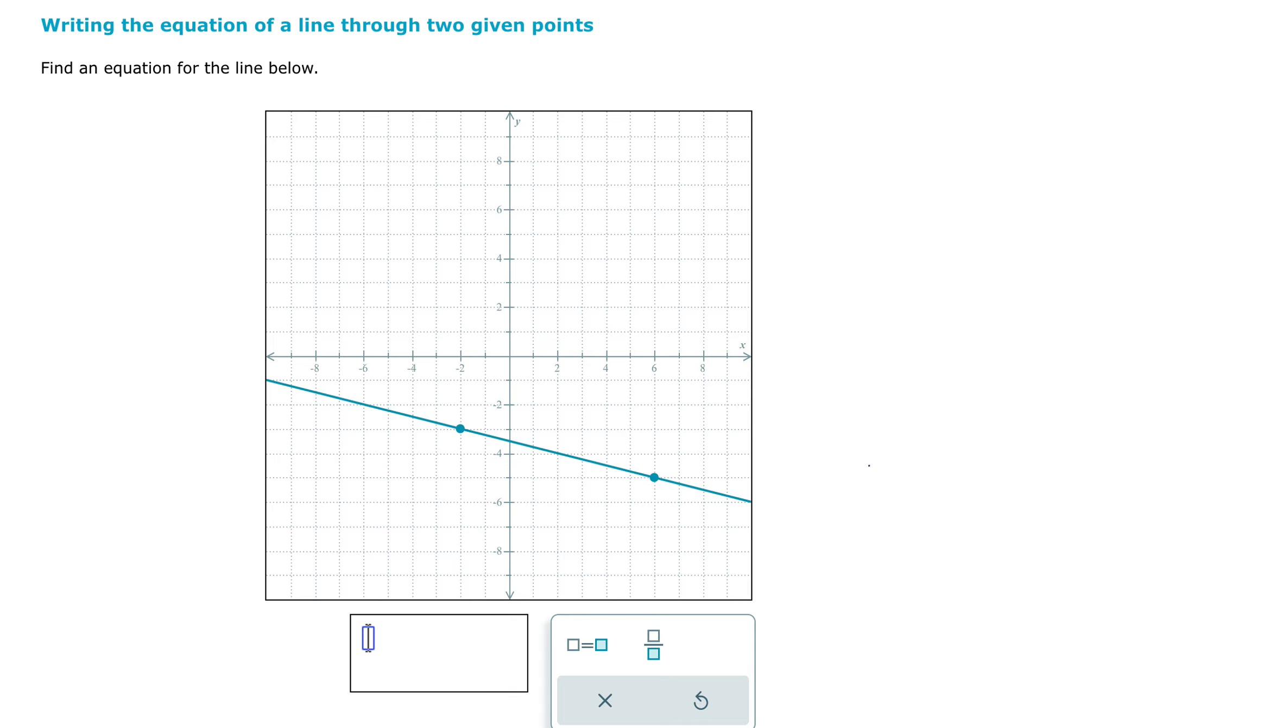In this video, we're going to solve this Alex problem, writing the equation of a line through two given points. So we have our points on the graph. The first thing that we need to do for this problem is find the slope, and there's a couple of ways that we could do this.